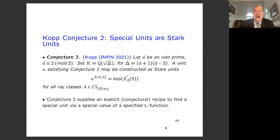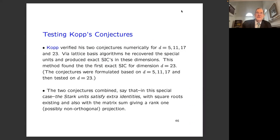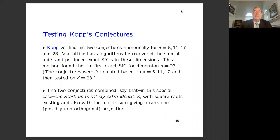Kopp's second conjecture is that you can explicitly find a unit with the above properties by constructing it as a Stark unit from an L-function. He verified both conjectures for D = 5, 11, 17, and 23. The case D=29 is next. He produced exact SICs in these dimensions following that recipe — the SICs for 5, 11, and 17 were known, but he got a different representation; he found the first exact SIC in dimension 23 by this recipe. The conjectures were formulated based on the D = 5, 11, 17 data and then tested on D = 23.